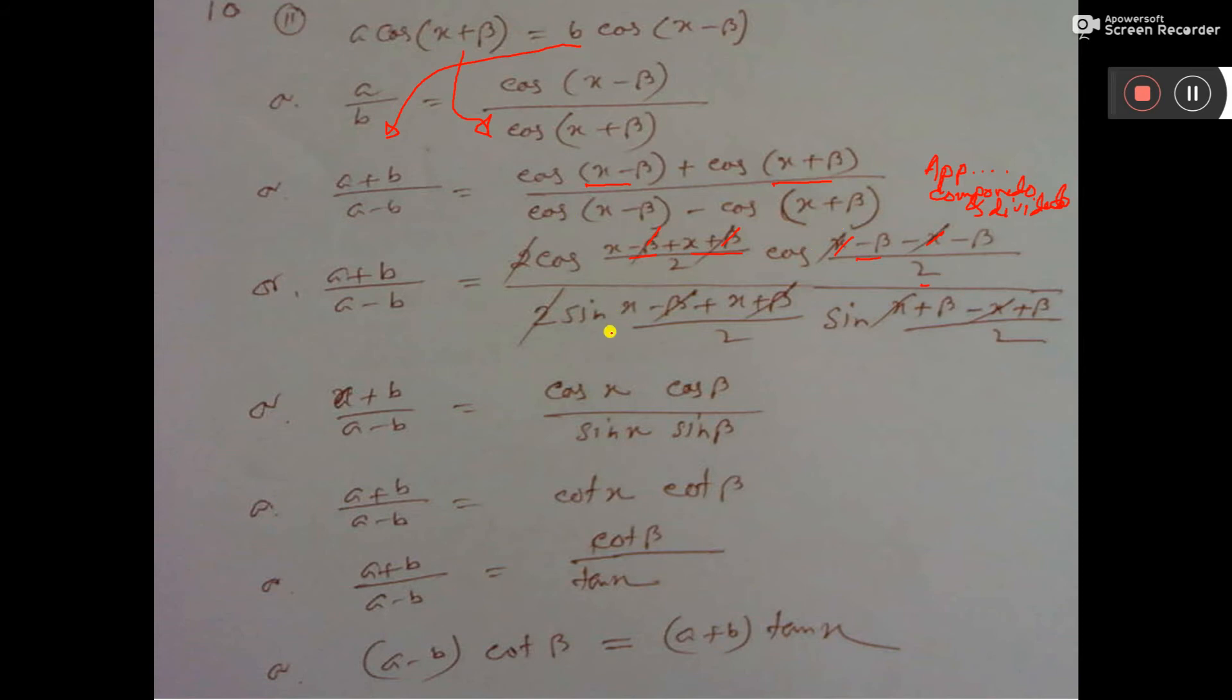Here also cos C minus cos D, 2 sin(C+D)/2 into sin(D-C)/2. Here beta beta cancel, x x cancel. So these two, these two also cancel.